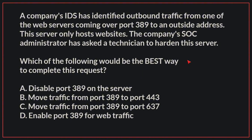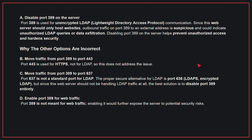A company's IDS has identified outbound traffic from one of the web servers coming over port 389 to an outside address. This server only hosts websites. The company's SOC administrator has asked a technician to harden this server. The correct answer is A: disable port 389 on the server. Port 389 is used for unencrypted LDAP communication. Since this web server should only host websites, outbound traffic on port 389 to an external address is suspicious and could indicate unauthorized LDAP queries or data exfiltration.